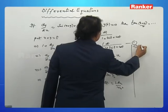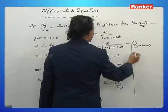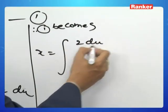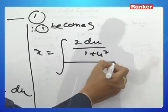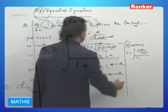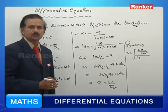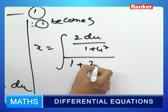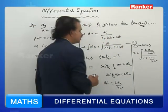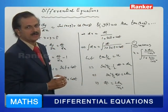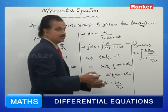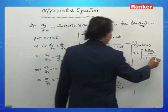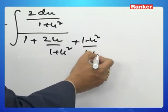Substituting into the integral: x equals integral of [2du/(1+u²)] divided by [1 plus sin(t) plus cos(t)]. Using sin(t) = 2u/(1+u²) and cos(t) = (1-u²)/(1+u²), and multiplying numerator and denominator by (1+u²), we get x equals integral of 2du over (1+u² plus 2u plus 1-u²).